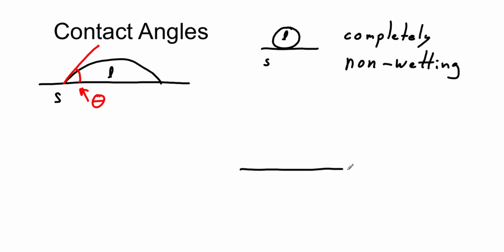On the other hand, we might have a surface where drops spread out to completely cover the surface. So we'd have our liquid and our solid, and this would be perfectly wetting.